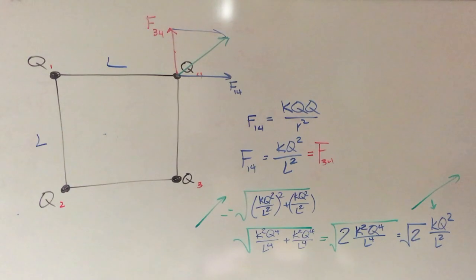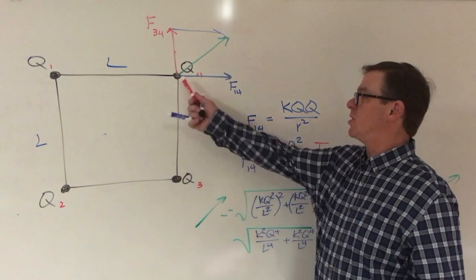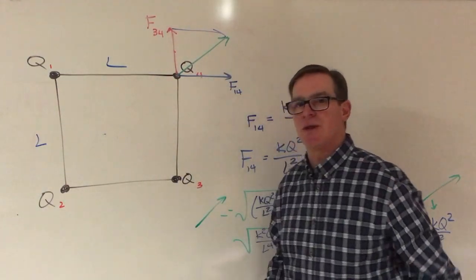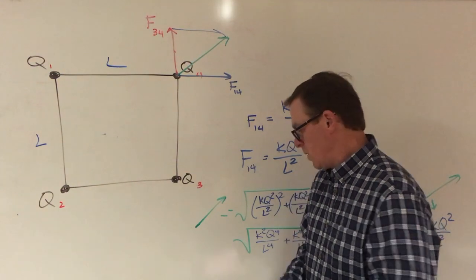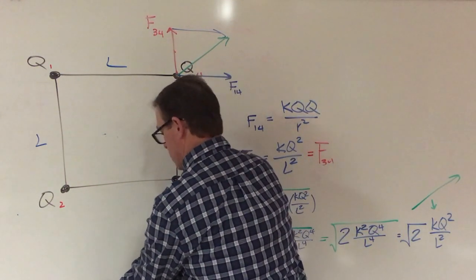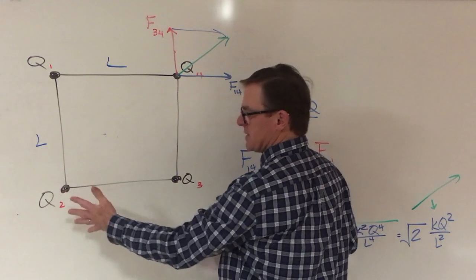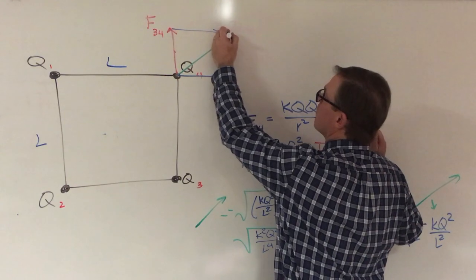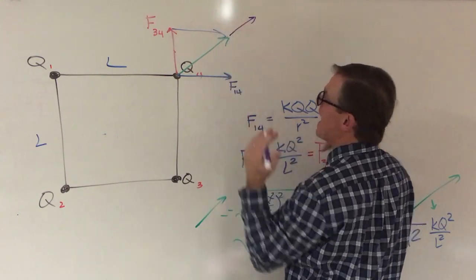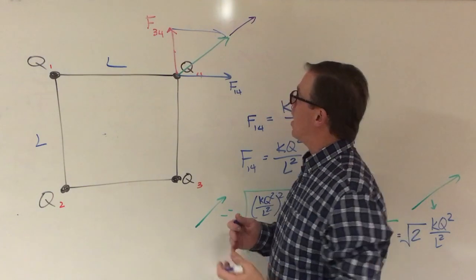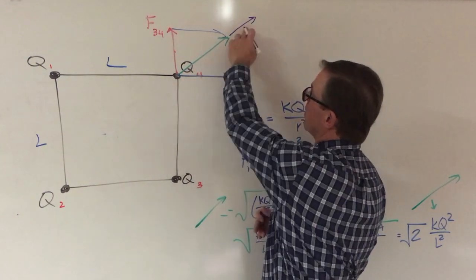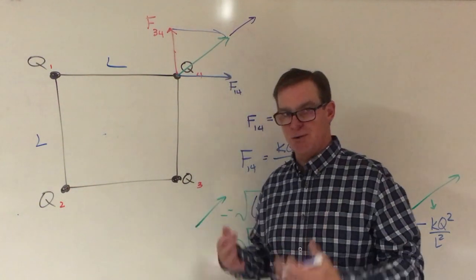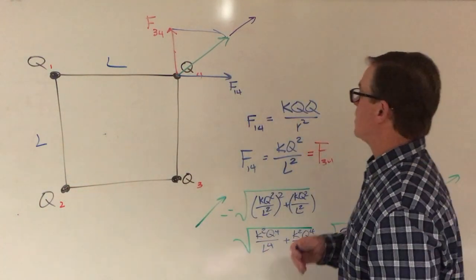So we have taken care of two, the force on Q4 due to these two charges, but we still have Q2 in the lower left corner. Again, they're all identical charges, so they are going to be repulsive, and so there's a little more force acting in exactly the same direction on Q4 that comes from the effect of charge Q2.